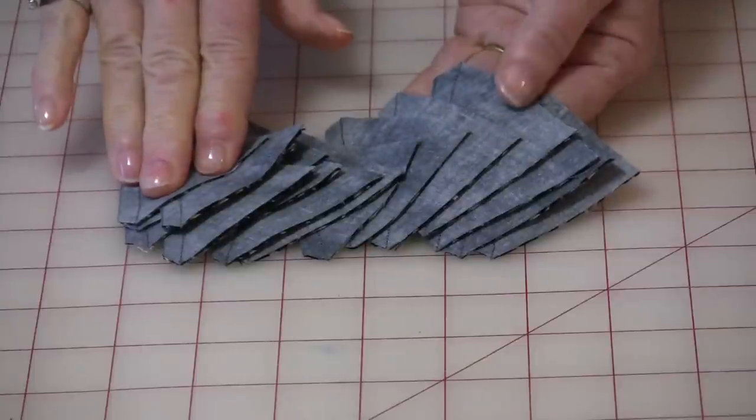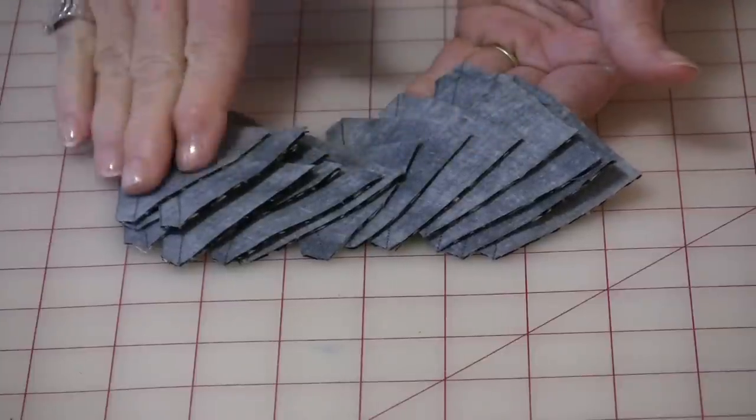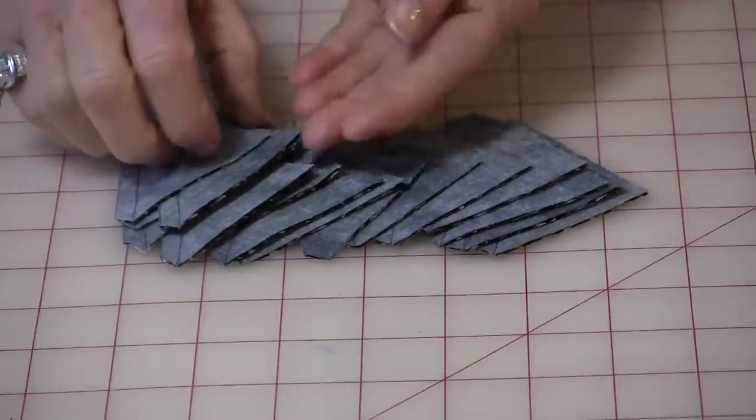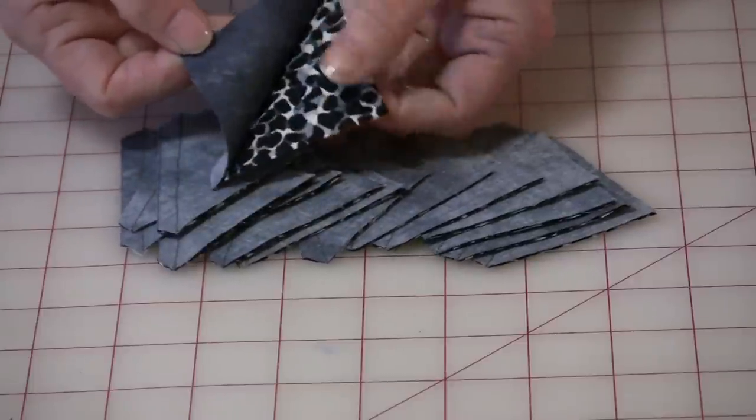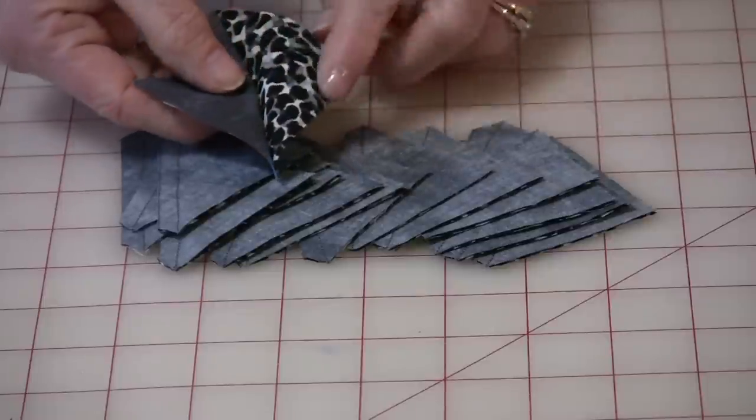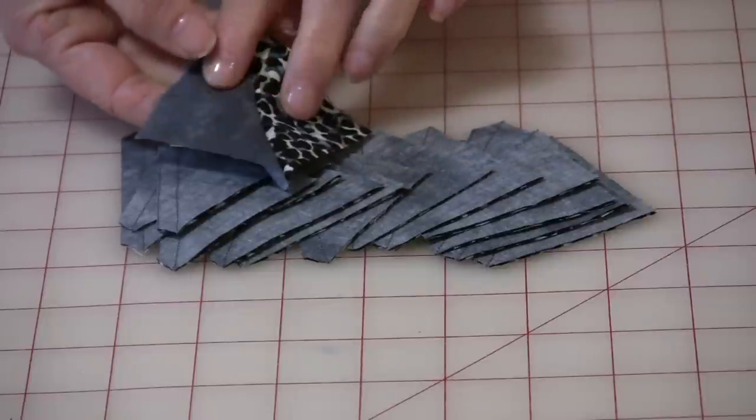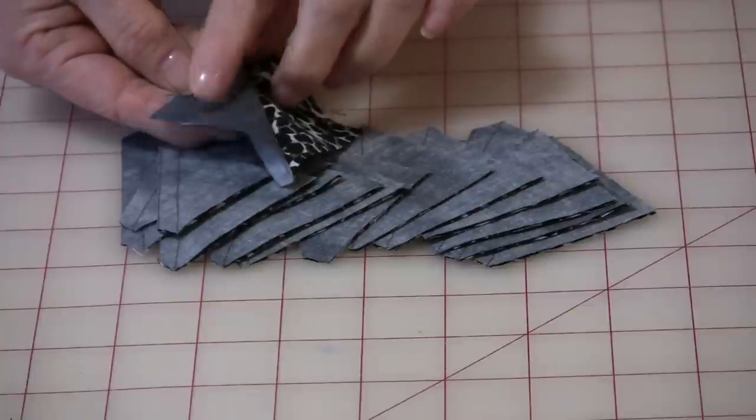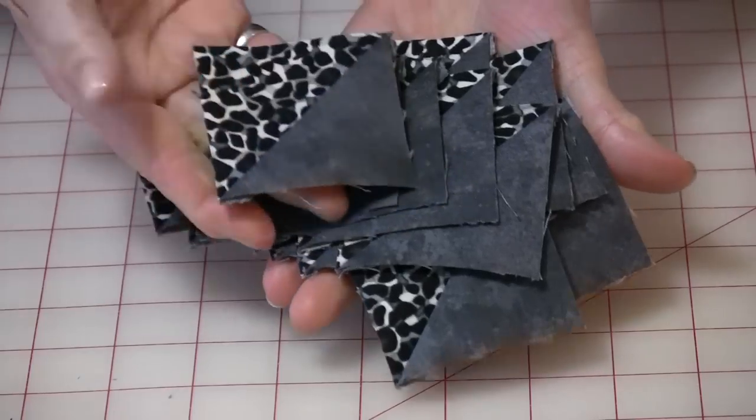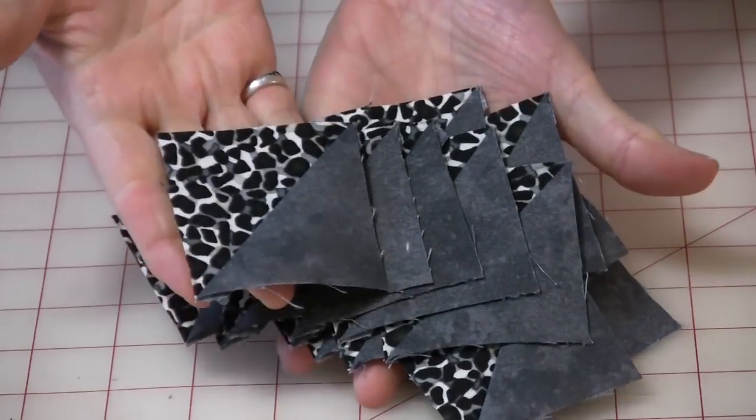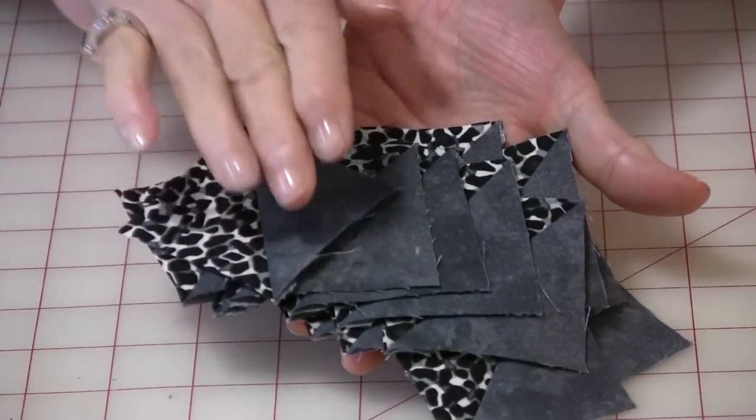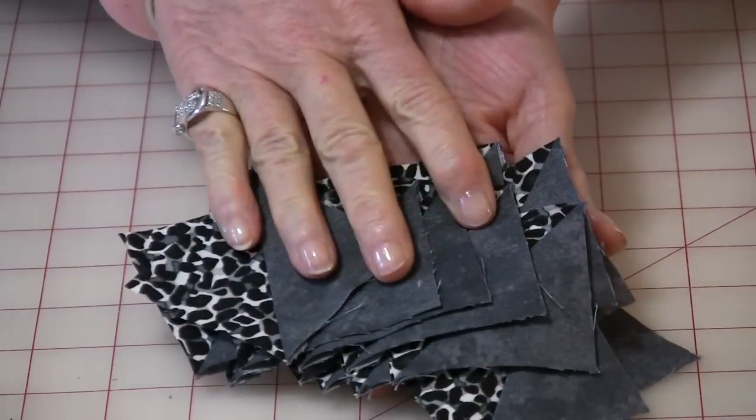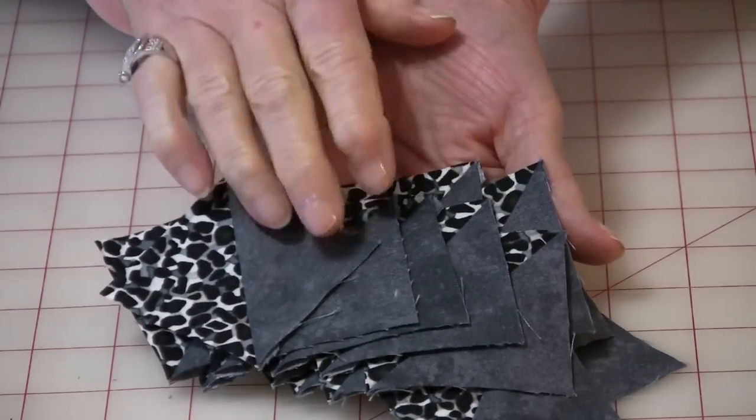Now from the eight squares cut in half and trimmed you now have sixteen of these little 2½ inch squares. Now you need to take them to the iron and press them towards the darkest piece of your fabric, and in my case it will be this one. So now all of my 2½ inch squares are done. They're all pressed and ready to go. Now let's put this aside so that we can get the other components ready.